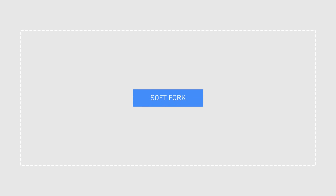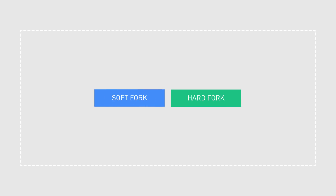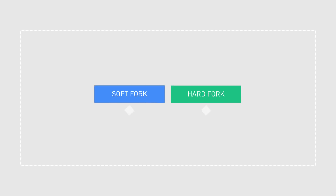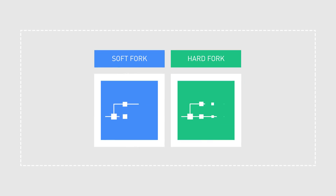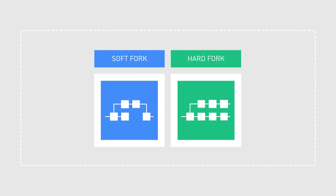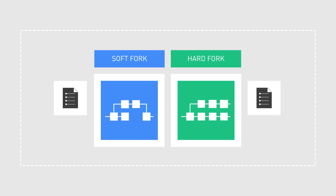There are two types of forks in crypto: soft forks and hard forks. Both kinds of forks fundamentally change how the protocol of a cryptocurrency works.